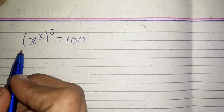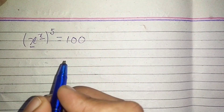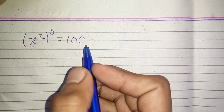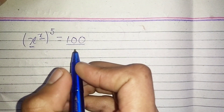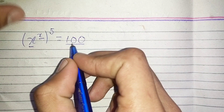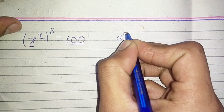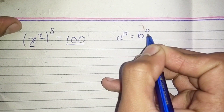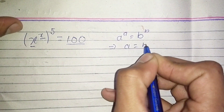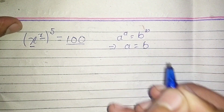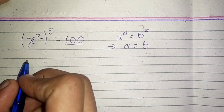In this video we are going to solve this equation: (x^x)^5 = 100. To solve it, we have to transform the whole equation into the form a^a = b^b, from which we can say that a is equal to b. Let's go to the solution.